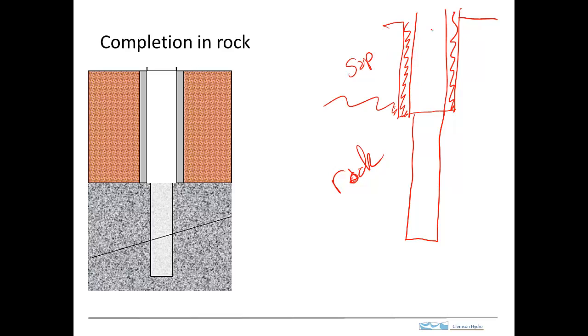So the casing goes through the saprolite. Saprolite is fairly weak material, and so a hole drilled through saprolite would not stay open. The casing is put through the saprolite down to the rock, and then the rock itself is just left open. So here's, say, a fracture in the rock. And that's what I show here in this diagram.